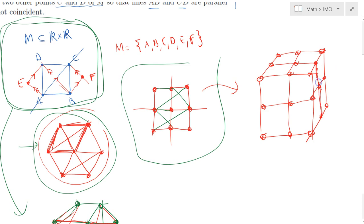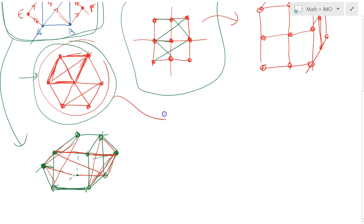Namely, if you pick any two points, you draw the line between the two points, then you can find two other points which are parallel to that line in 3D. That's another construction.